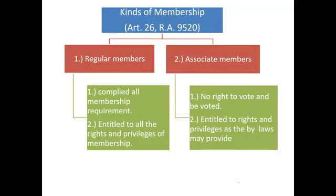Under the implementing rules, out of the total capital, the share allocated to preferred shares must be at most 25%. For example, if the authorized capital is 10 million, only up to 2.5 million can be allocated for preference shares. This is not found in RA 9520 itself but is found in the implementing rules issued by the CDA.